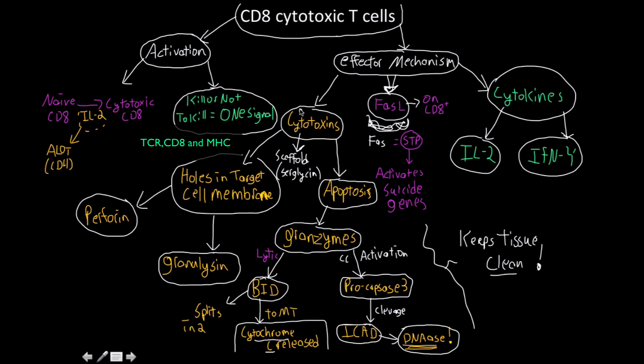One final note: cytotoxins are made in an inactive form, and upon activation — usually inside a lysosome or lytic granule — they become functional. Cytokines, however, as seen more with helper T cells but also with CD8 T cells, are made and produced on contact.